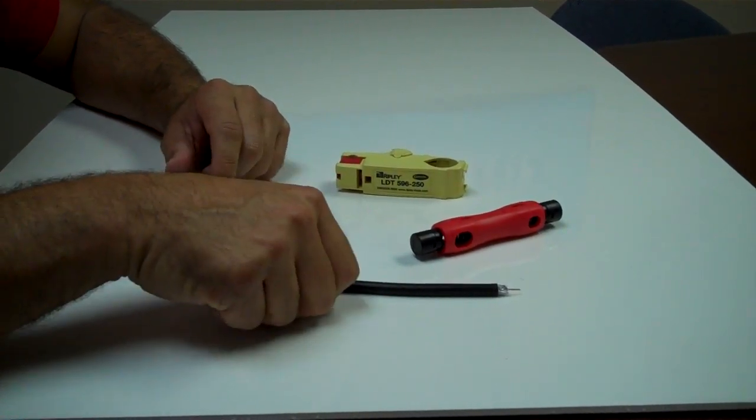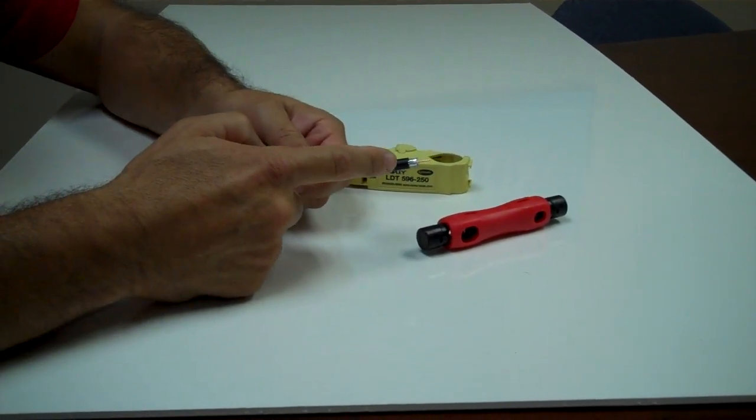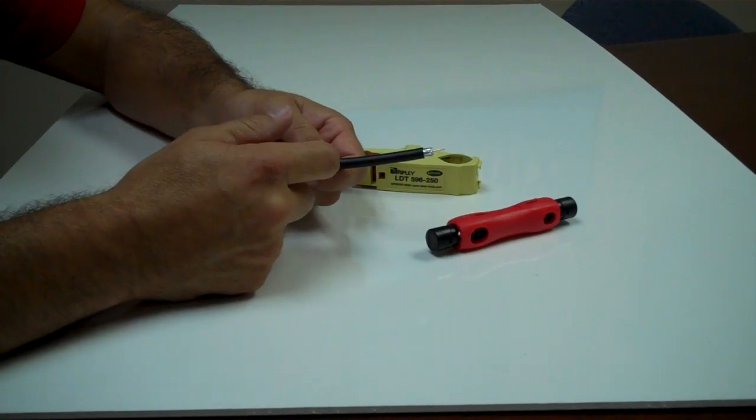Just wanted to share with everybody another simple way to prep RG-59, RG-6 or even RG-11 coax.